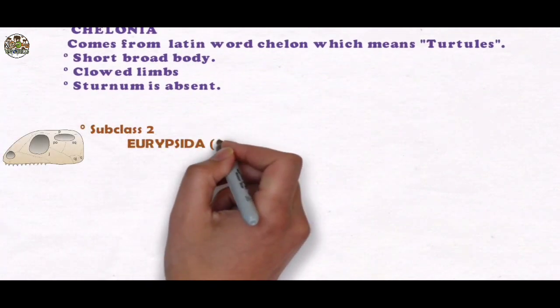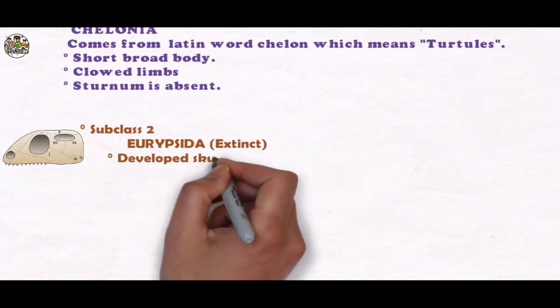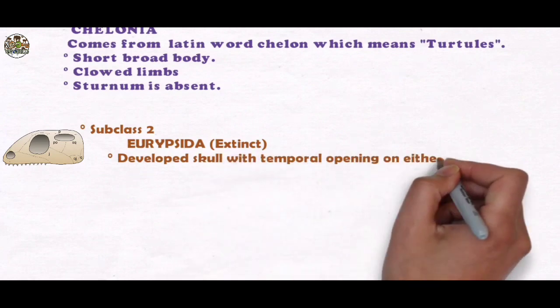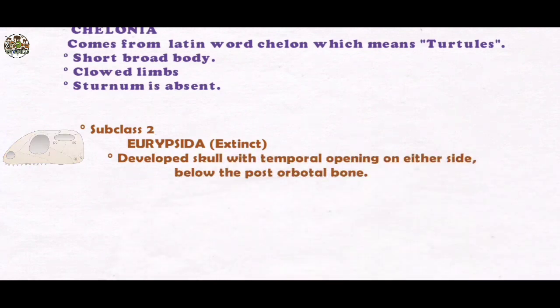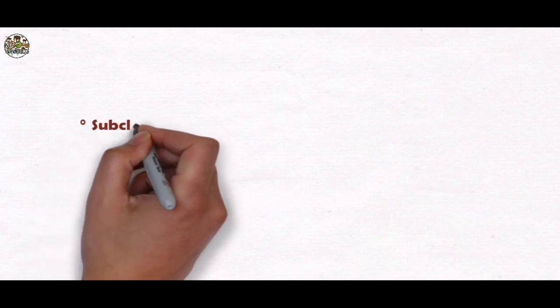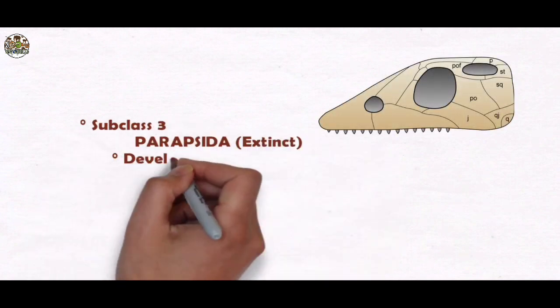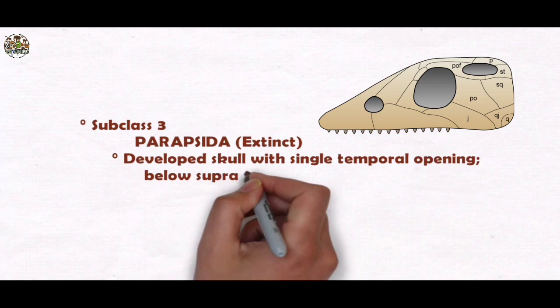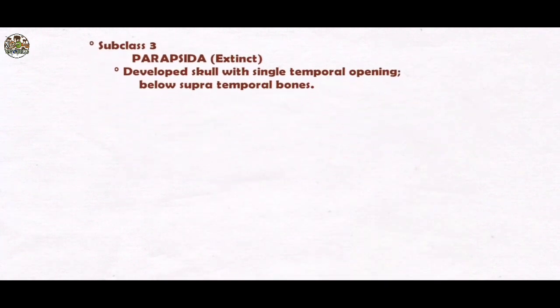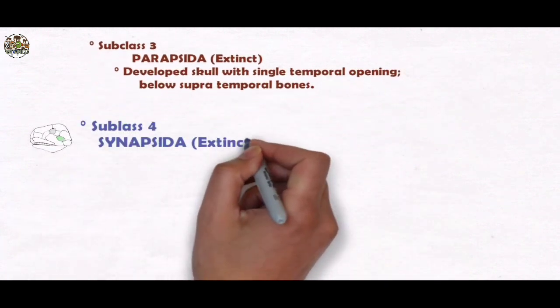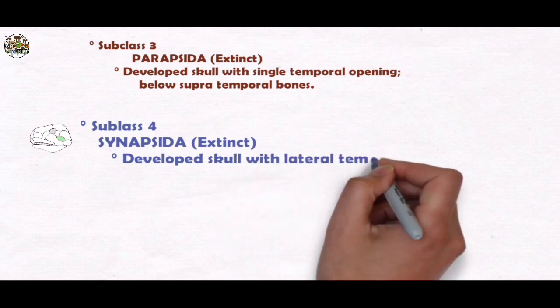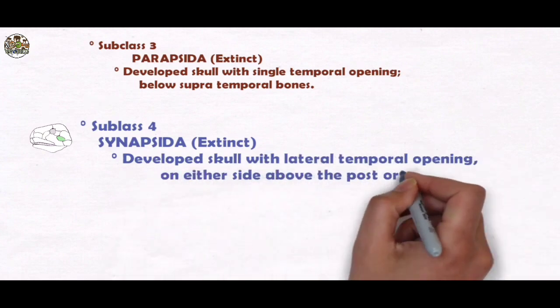Subclass 2: Eurapsida - developed skull with temporal opening on either side below the postorbital bone. Subclass 3: Parapsida - developed skull with single temporal opening below supratemporal bones. Subclass 4: Synapsida - developed skull with lateral temporal opening on either side above the postorbital bone.